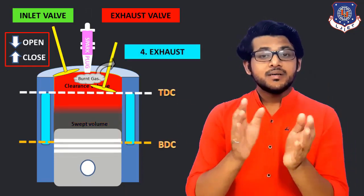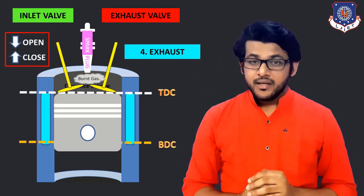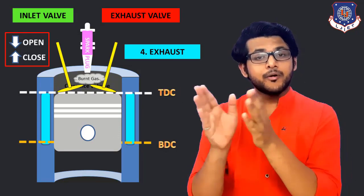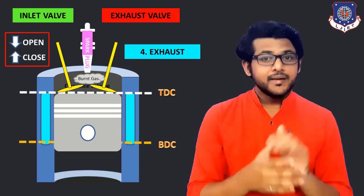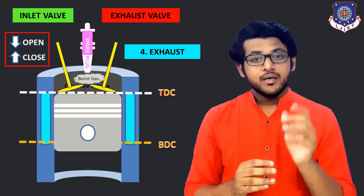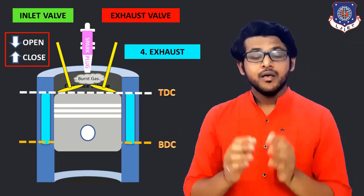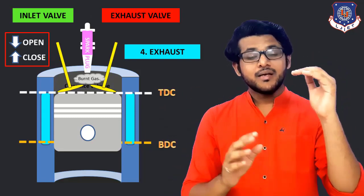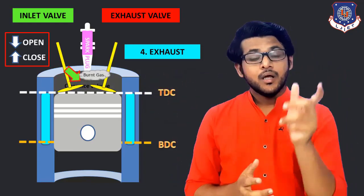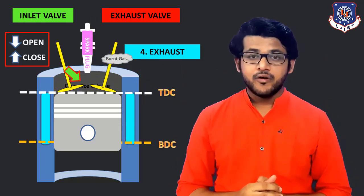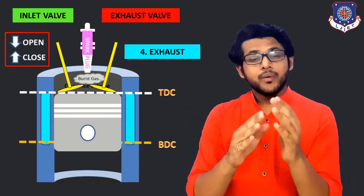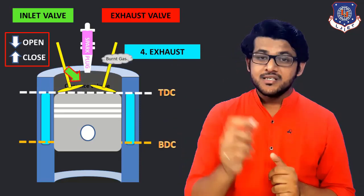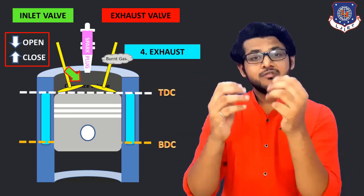When burnt gases are formed, some gases are also trapped inside the clearance volume and we have to remove all those gases from the engine. If we keep both valves open — exhaust valve and inlet valve — the fresh charge will enter from the inlet. In the fresh charge we will have fuel or fuel-air mixture, which is heavier than the exhaust gas. So that exhaust gas will be pushed out through the exhaust valve by this fresh charge. This phenomenon is called scavenging.